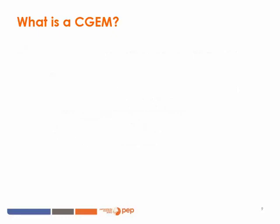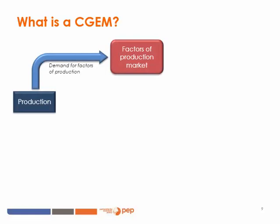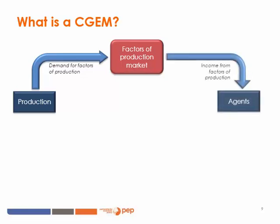In order to better illustrate the different linkages between the economic agents and activities, I have prepared a schema. In this schema, we can see that first, the producers demand factors of production in order to produce commodities and services, relying on factors such as labor and capital. These factors belong to agents — households, for example — that supply their workforce on the labor market in order to produce the different commodities. The same goes for capital supply. In exchange for their work on the labor market, the workers receive wages and salary, and this becomes income for the different agents.